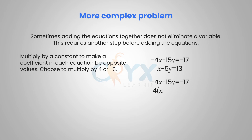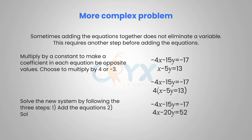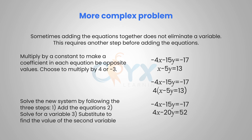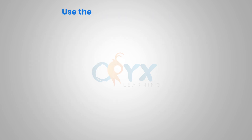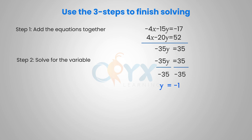If I multiply the second equation by 4, the first equation remains the same: −4x − 15y = −17. Distributing the 4 in the second equation gives 4x − 20y = 52. Now we can see that x has opposite coefficients: one is 4 and one is −4. Adding the equations together, −4 + 4 = 0, eliminating x, leaving −35y = 35. Dividing both sides by −35, we get y = −1.